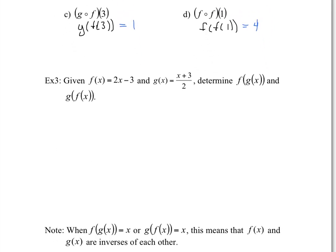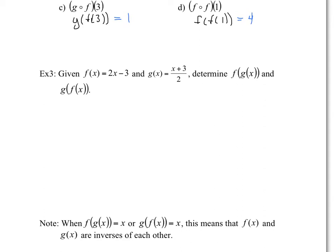Given that f of x equals 2x minus 3 and g of x equals (x plus 3) over 2, determine f of g of x and g of f of x. For f of g of x: I'm plugging g into f, so it's 2 times (x plus 3) over 2, minus 3. The 2s cancel out, so I have x plus 3 minus 3. Plus 3 minus 3 is 0, so f of g of x equals x.